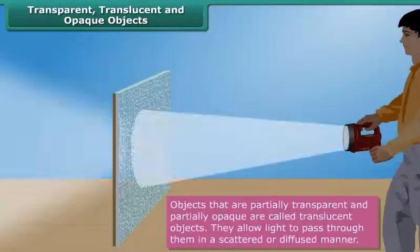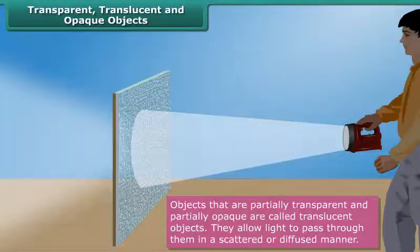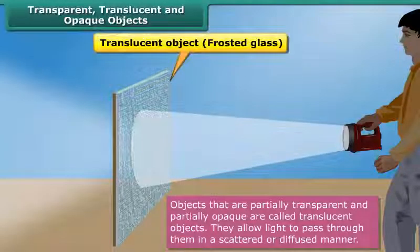Objects that are partially transparent or partially opaque are called translucent objects. They allow light to pass through them in a scattered or diffused manner.